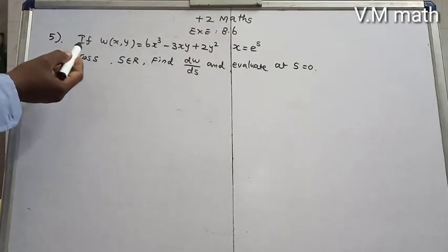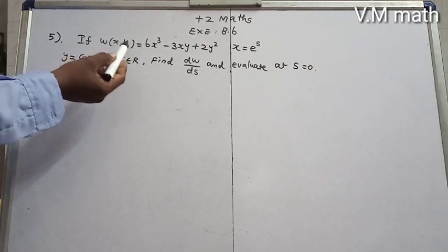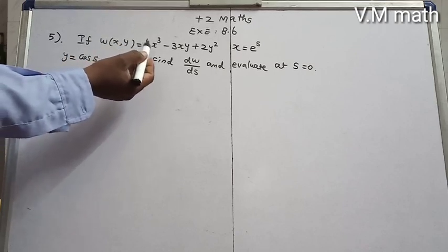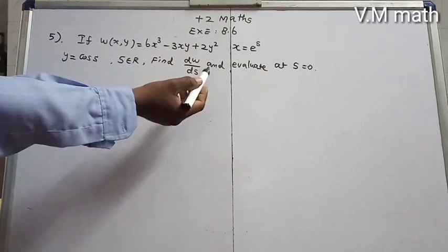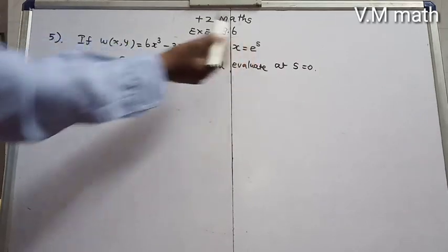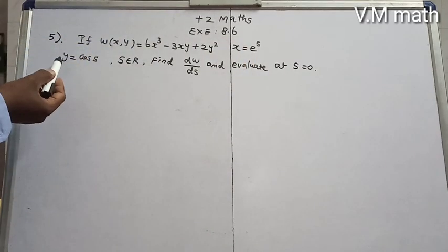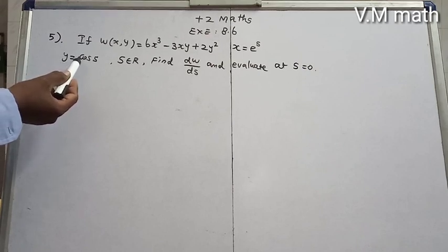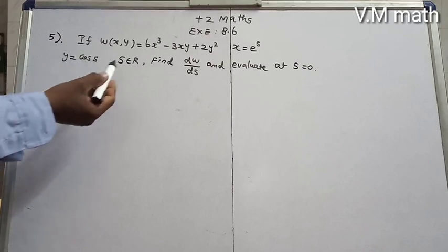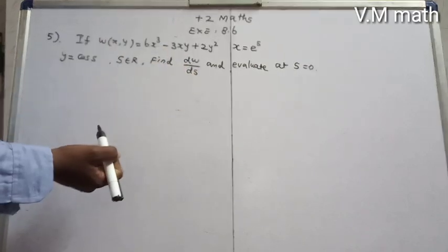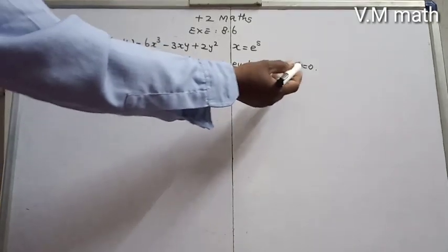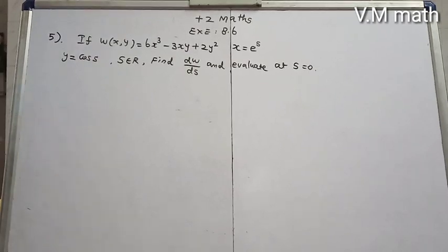This is exercise 0.16, fifth question. If w(x,y) = 6x³ - 3xy + 2y², where x = e^s and y = cos(s), with s belonging to the real numbers, find dw/ds and evaluate at s = 0.